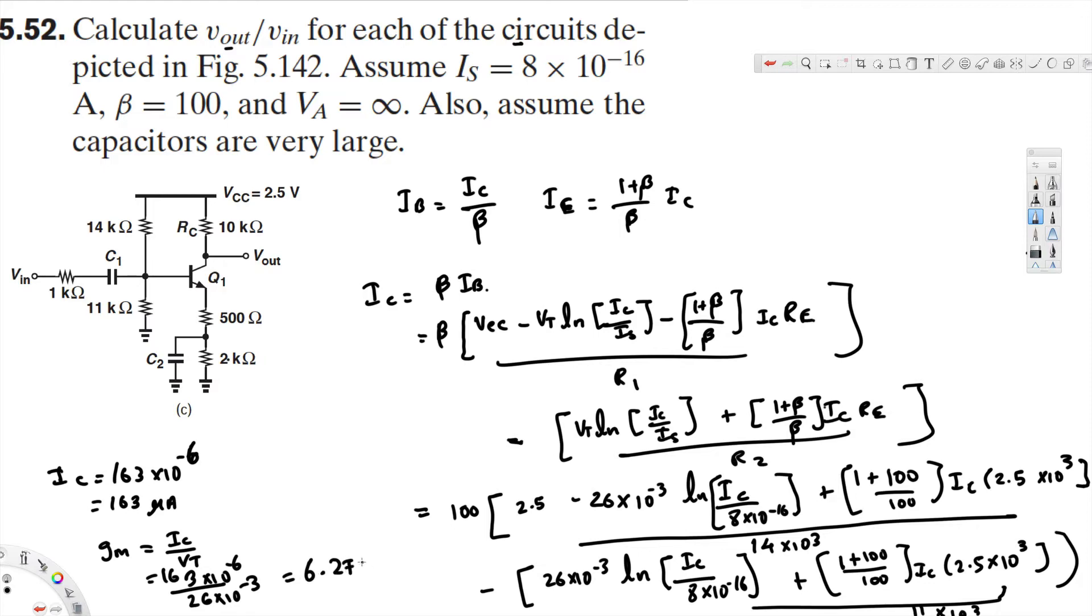Now the next thing is we have to calculate the gain. Gain is our final question. Gain A_v is equivalent to R_C divided by 1 over g_m plus R_E1 plus R_S parallel R1 parallel R2, R1 parallel R2 divided by 1 plus beta. R_C here, negative, this is negative okay, negative.